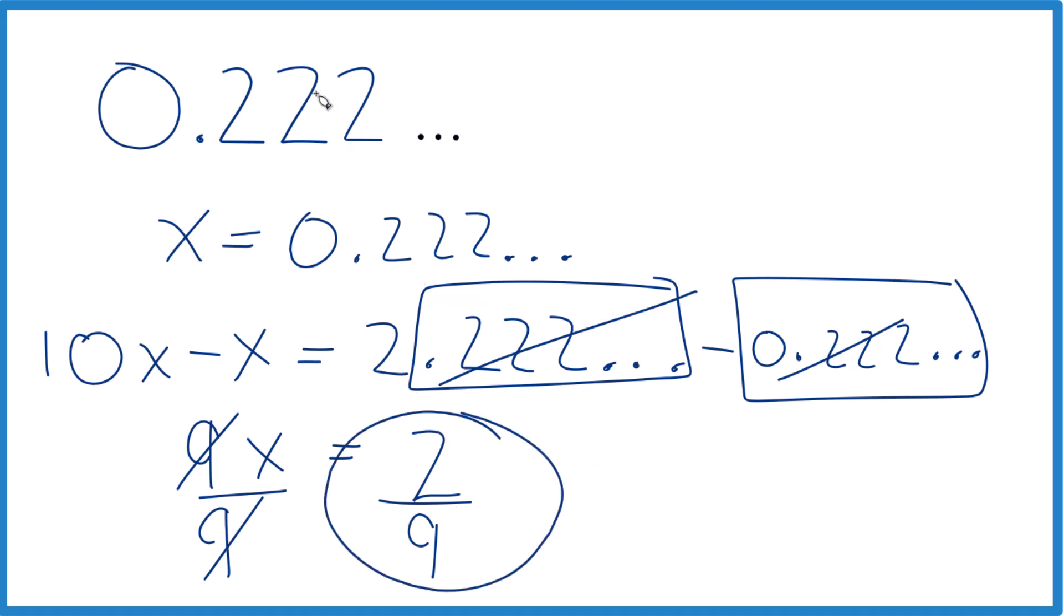So when you have the decimal 0.222 repeating, you can go through this process here and you end up with 2/9. You do need to practice this a few times, it's a little bit involved. This is Dr. B, thanks for watching.